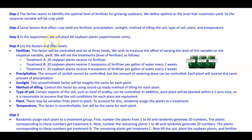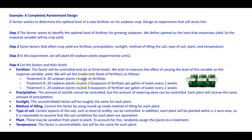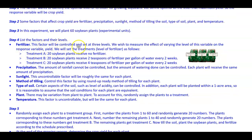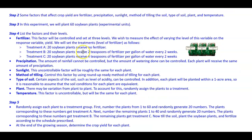Step three: in this experiment we will plant 60 soybean plants as experimental units. Step four: list the factors and their levels. Fertilizer — this factor will be controlled and set at three levels to measure its effect on yield. Treatment A: 20 soybean plants receive no fertilizer. Treatment B: 20 soybean plants receive two teaspoons of fertilizer per gallon of water every two weeks.